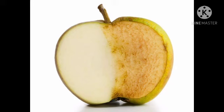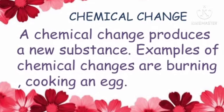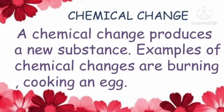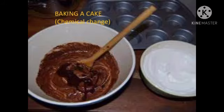Now we understand physical and chemical changes. What is meant by a chemical change? A chemical change produces a new substance. Examples: baking a cake, cooking an egg, etc.